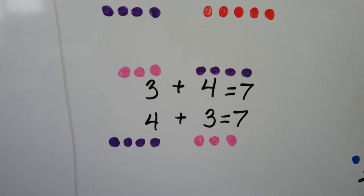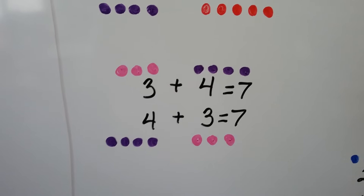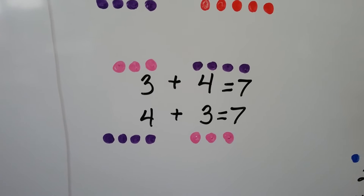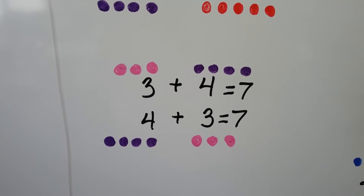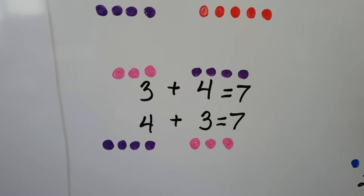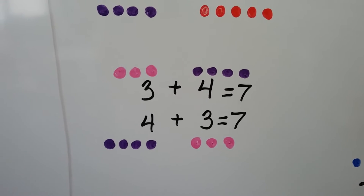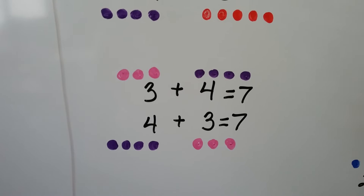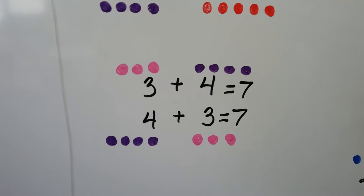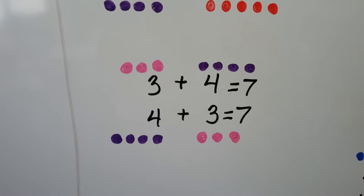Here we have three plus four equals seven, and four plus three equals seven. It doesn't matter which order we add them — it's still going to equal seven.